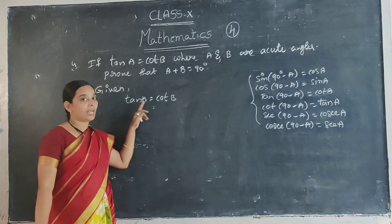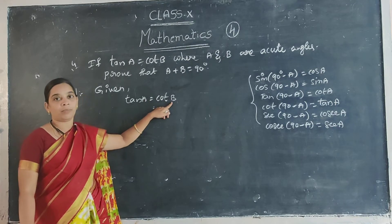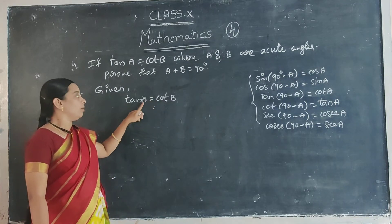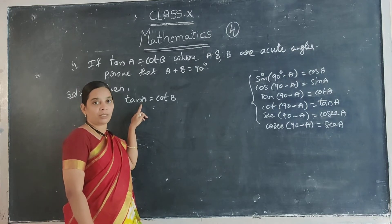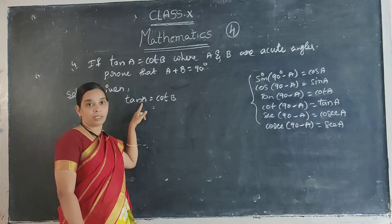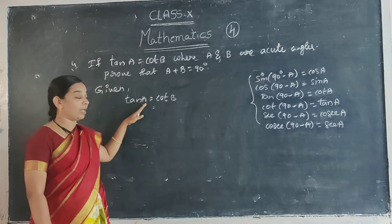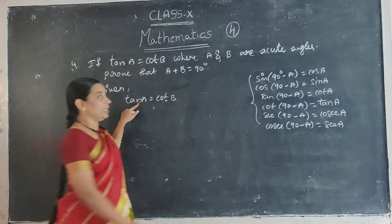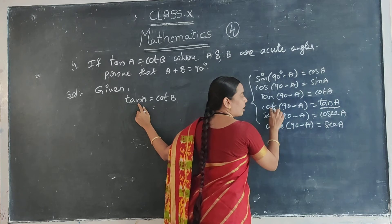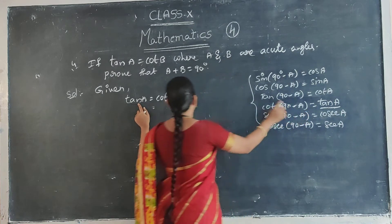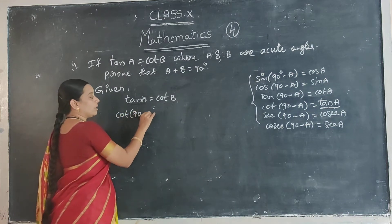Now the given condition is tan A is equal to cos B, but here variables A and B are there. How to find the complementary angle of A? Here a variable is there, so we can't directly find complementary angles. That's why tan A is written in the complementary form: tan A equals cos(90 − A). So in the place of tan A, write cos(90 − A).